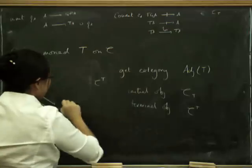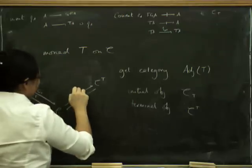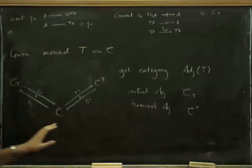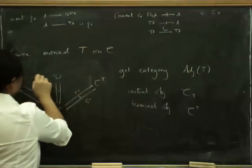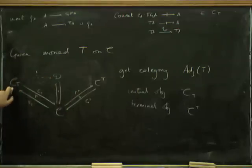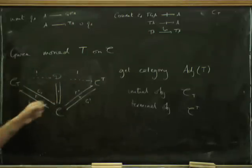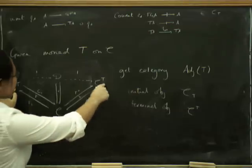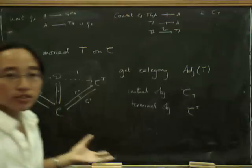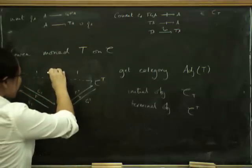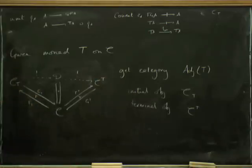In Ad_T, the Kleisli category adjunction (F_T, G_T) is the initial object, and the Eilenberg-Moore category adjunction (F^T, G^T) is the terminal object. Given any other adjunction giving rise to T, there's a unique map from the Kleisli adjunction to it, induced by initiality, and a unique map from it to the Eilenberg-Moore adjunction, induced by terminality. So you get a tug-of-war with fixed ends.